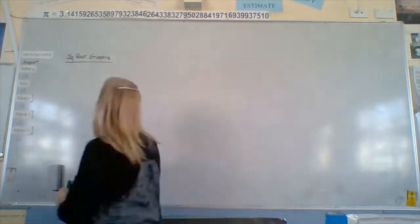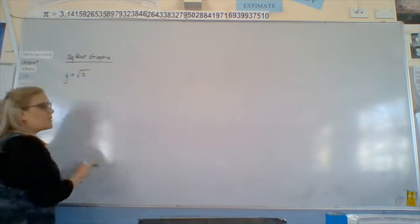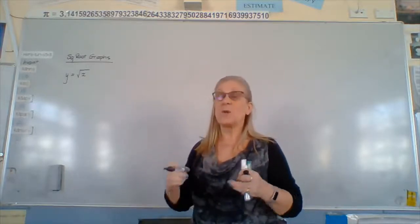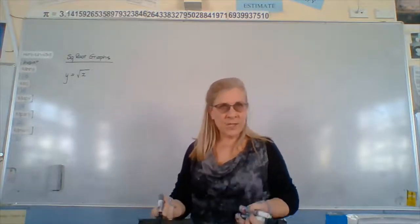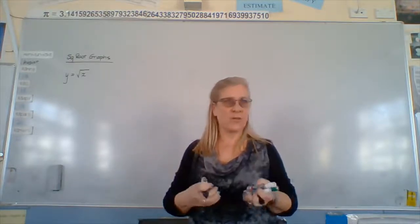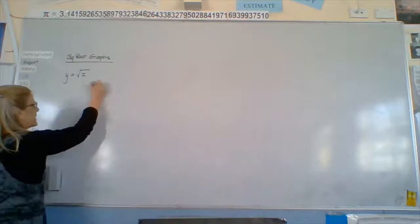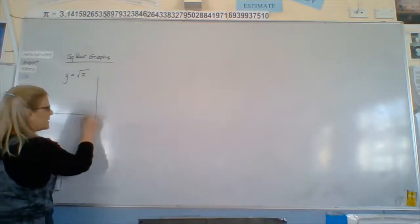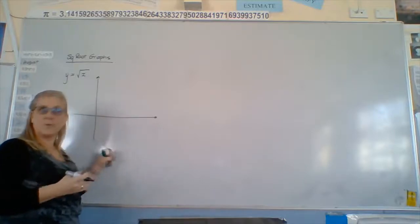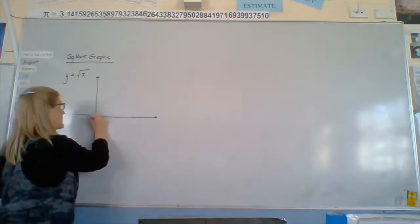So the basic graph for this one is y equals the square root of x. Now, because we treat graphs as functions, we can't put the plus and minus in front of this. We could, and we would get a graph, but we wouldn't get a function, and we're treating these as function graphs, so we only want the positive side of it. So we need to take the square root of whatever we have for x. The square root of 0 is 0.